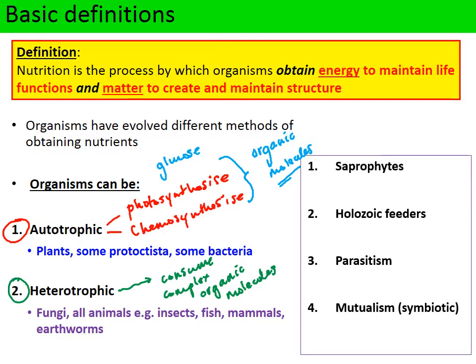There are four main types of heterotrophs. Saprophytes include all fungi and also some bacteria that cannot photosynthesize, so bacteria can also be heterotrophs. Saprophytes secrete enzymes outside the cell, and these enzymes digest complex molecules outside the cell — we call this extracellular digestion. The products of this digestion are then absorbed into the cells across the cell membrane, so they secrete enzymes, digest their food outside the organism, and the breakdown products are absorbed and utilized.